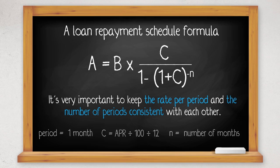If the loan payments were made weekly, so the period was one week, then the rate per period needs to be adjusted to weekly rates by dividing by 52, and the number of periods would be the number of weeks on the loan.